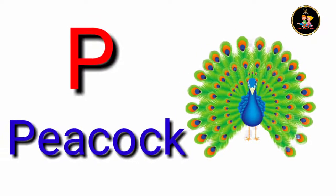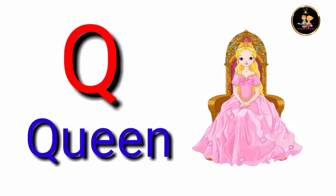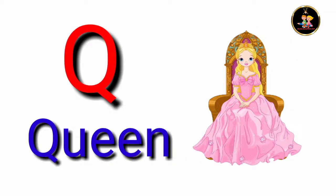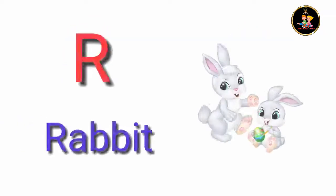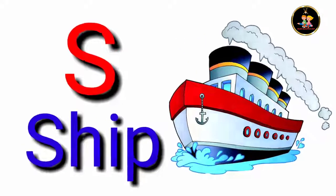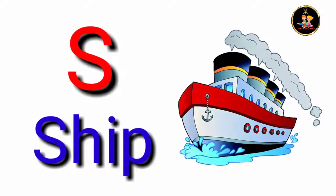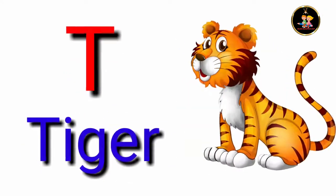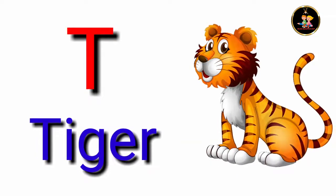P for peapod, Q for queen, R for rabbit, S for sheep, T for tiger.